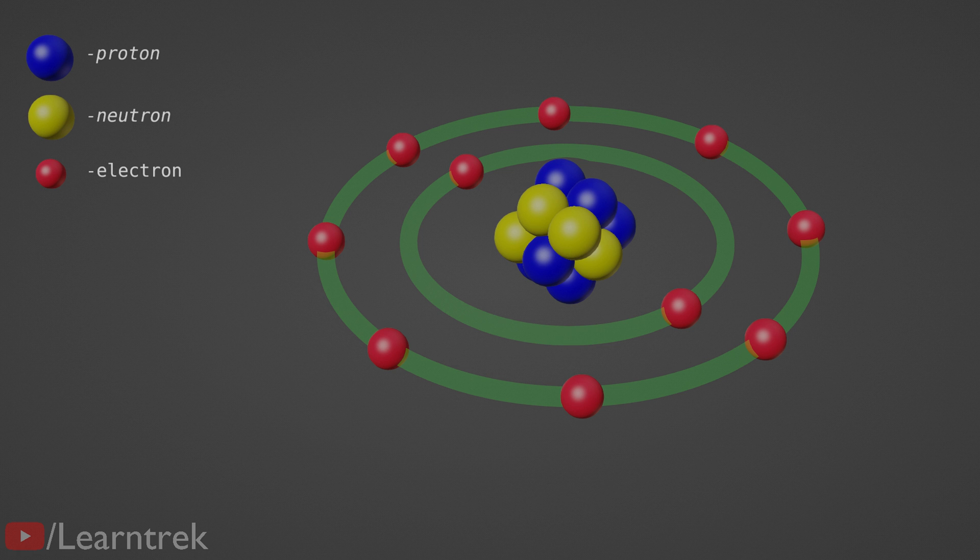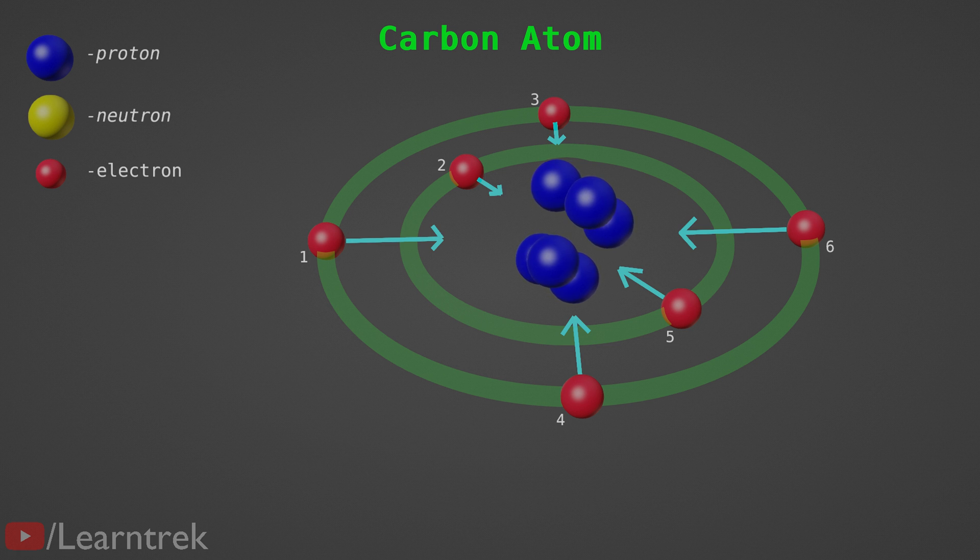Let's know about this in detail. 6 protons in the nucleus hold 6 electrons due to the attraction between positively charged protons and negatively charged electrons. Positive charge on 6 protons balances negative charge on 6 electrons.